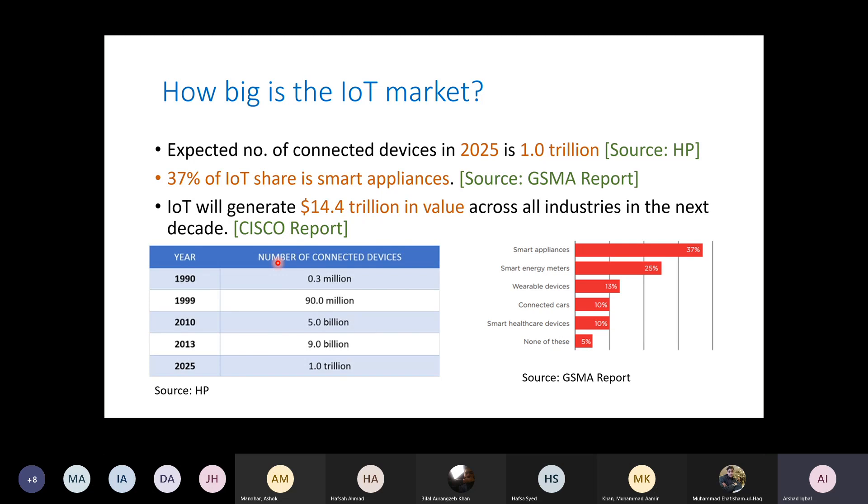GSMA reports that 37% of IoT share is smart appliances. If you could see on the right of the screen, there are plots or figures which show that smart energy meters have a share of 25%, while wearable devices, connected cars, and smart healthcare devices have a share of 13%, 10%, and 10% respectively.